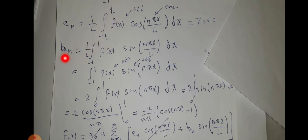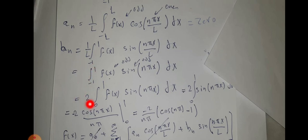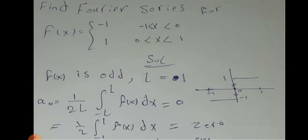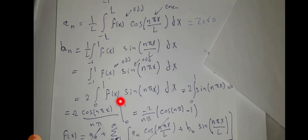For bₙ, the integrand is f(x) times sin(nπx/l). Since f(x) is odd and sine is also odd, odd times odd equals even. The integral of an even function from negative 1 to 1 equals twice the integral from 0 to 1. Substituting f(x) equals 1 on that interval and integrating gives the final expression for bₙ. We can then express f(x) as a Fourier series as shown in the last line.